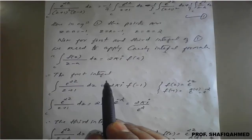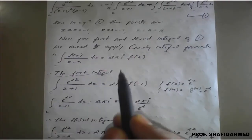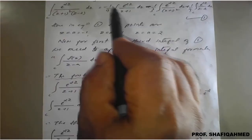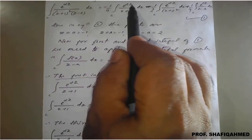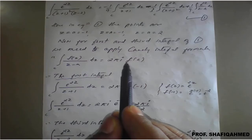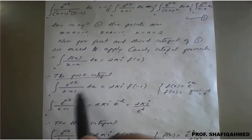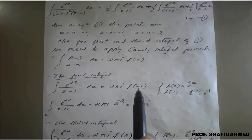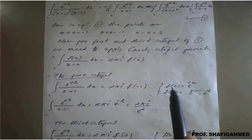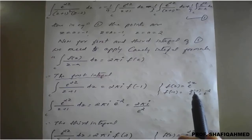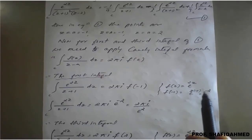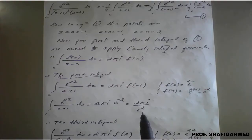Cauchy's integral formula is given by: integral of f of z upon (z minus a) dz equals 2 pi i times f of a. For the first integral, keeping minus 1 upon 9 outside, we integrate e raised to 2z upon (z plus 1) dz. Here a equals minus 1, so it becomes 2 pi i times f of minus 1. Our f of z is e raised to 2z, so f of minus 1 equals e raised to minus 2, which equals 1 upon e raised to 2.